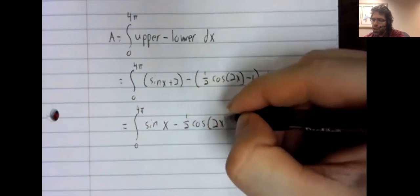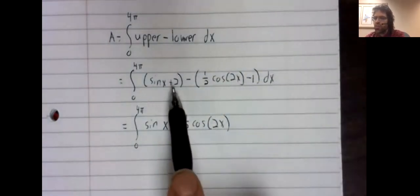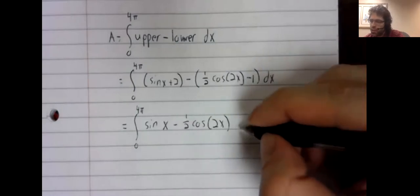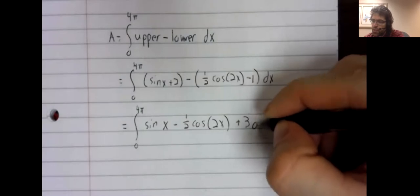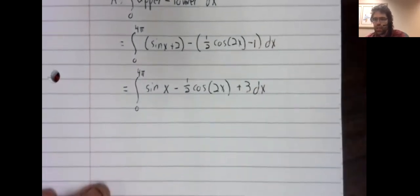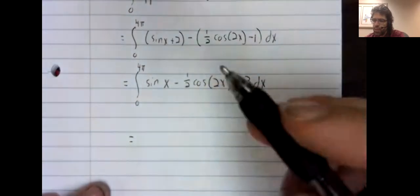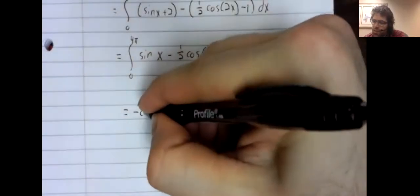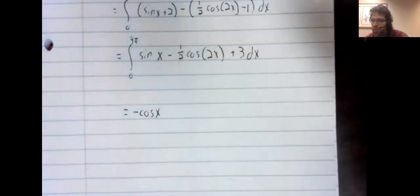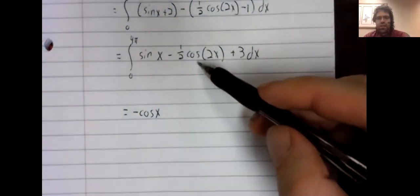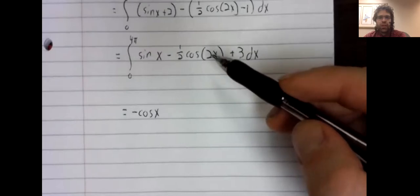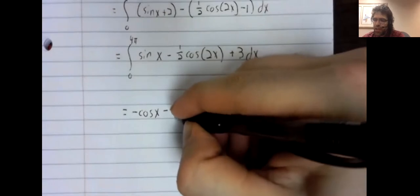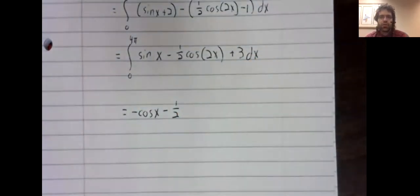But we can at least combine our constants two minus negative one is positive three. Let's see. The anti-derivative of the sine is the negative cosine. Let's see. The anti-derivative of the cosine of two x. First of all, let me write that negative one half.